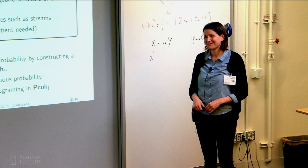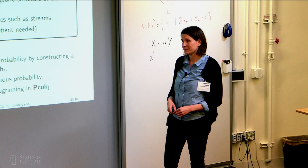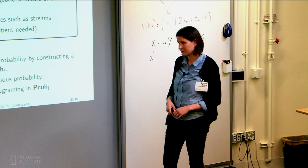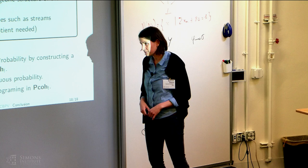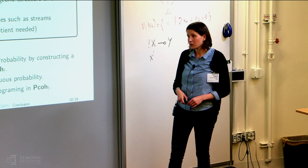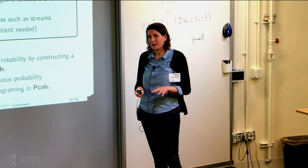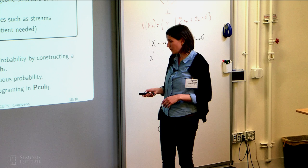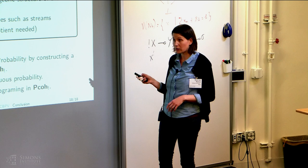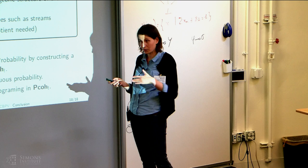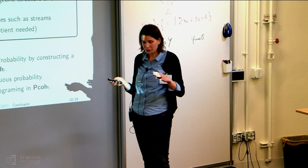Q&A continues: The definition of the exponential modality builds in the assumption that when you pick several times from the same type, you pick independently. Is there hope for an exponential that allows dependence between successive choices? The speaker responds: we didn't try to define such an exponential, but what we know is that this exponential is the free one — so whatever you construct, you will have to be able to construct a morphism from this exponential to the other one.